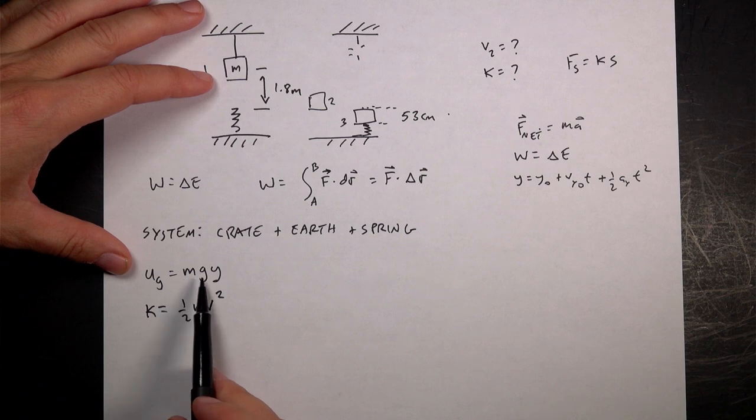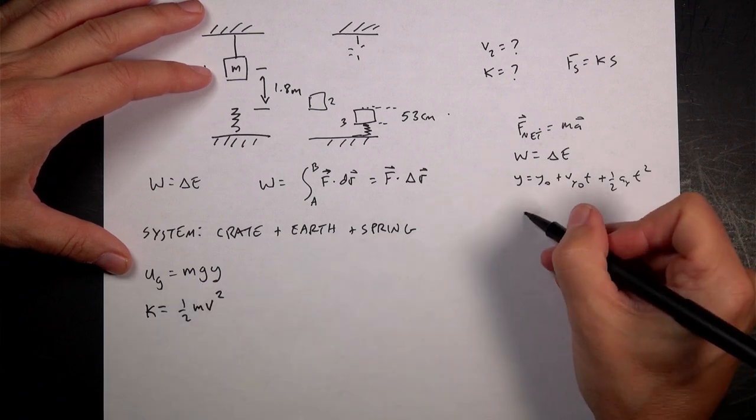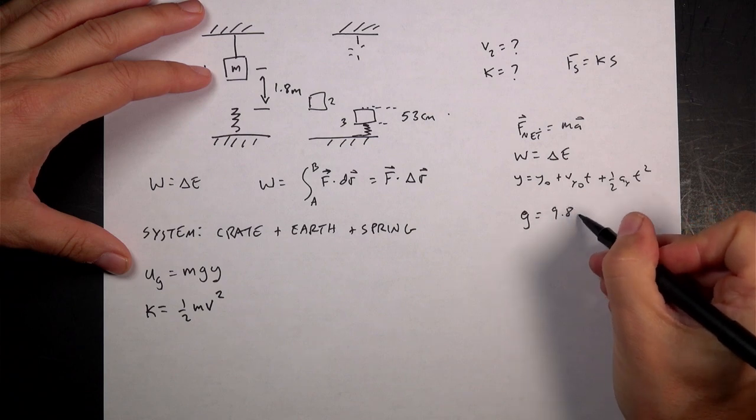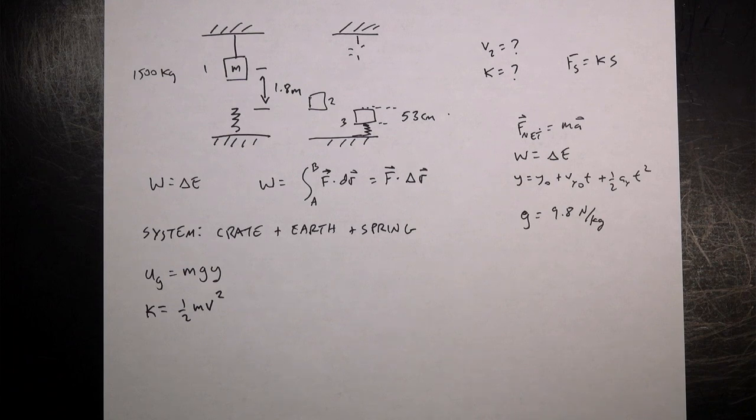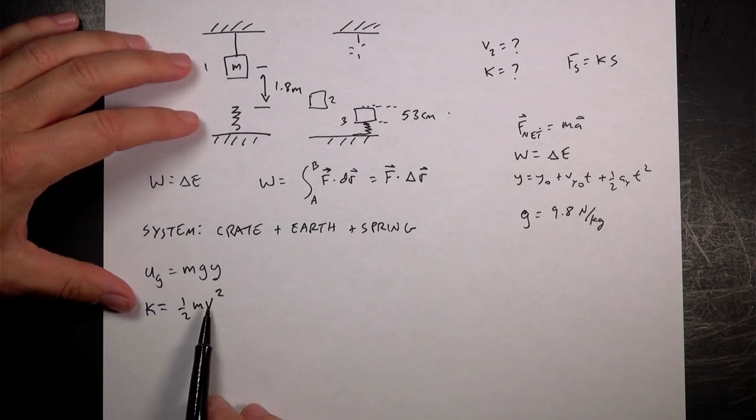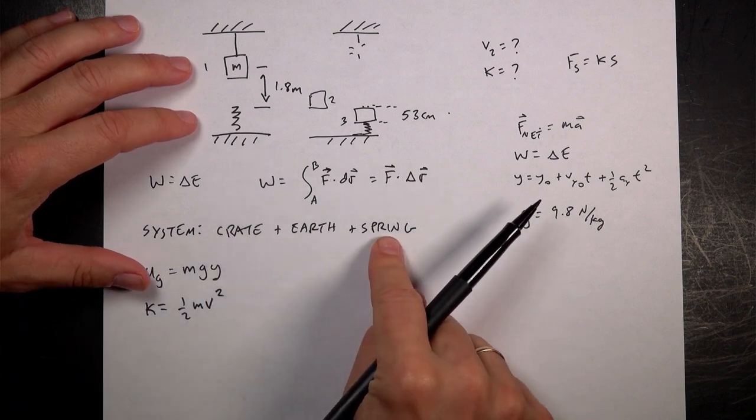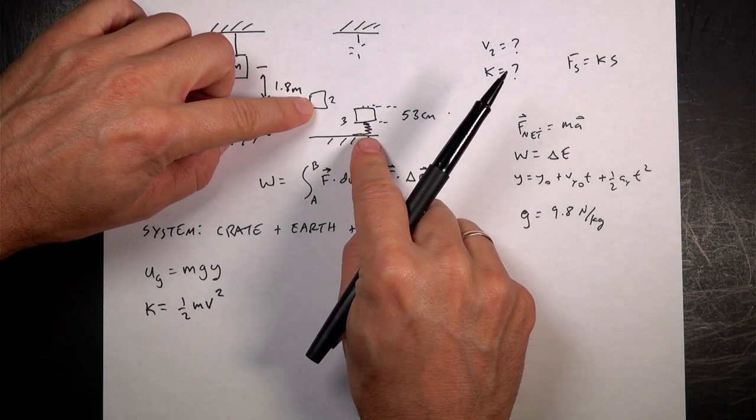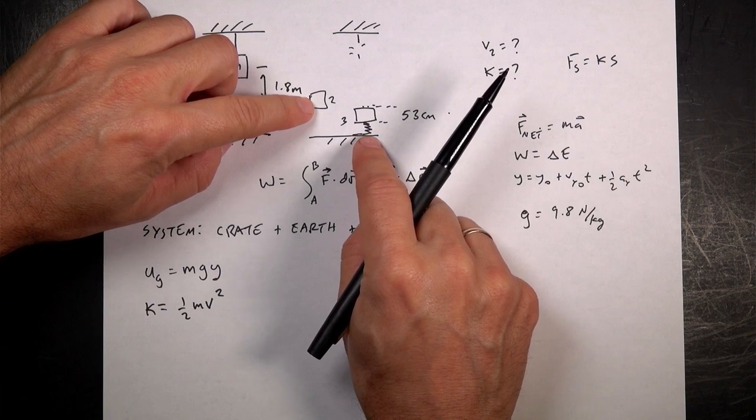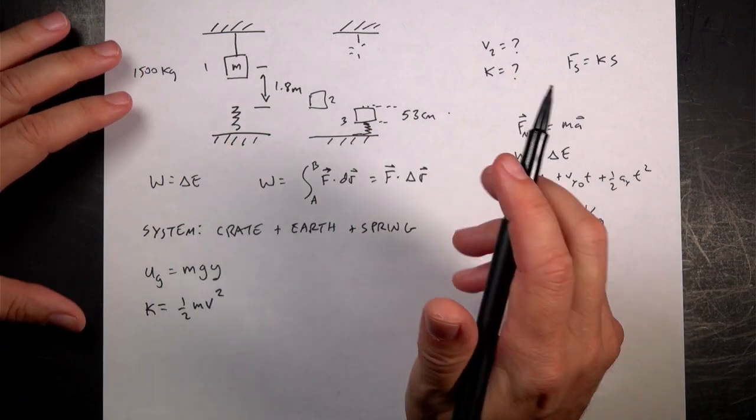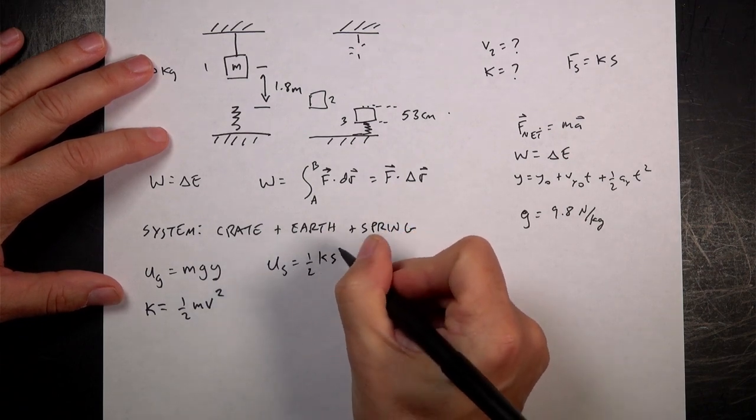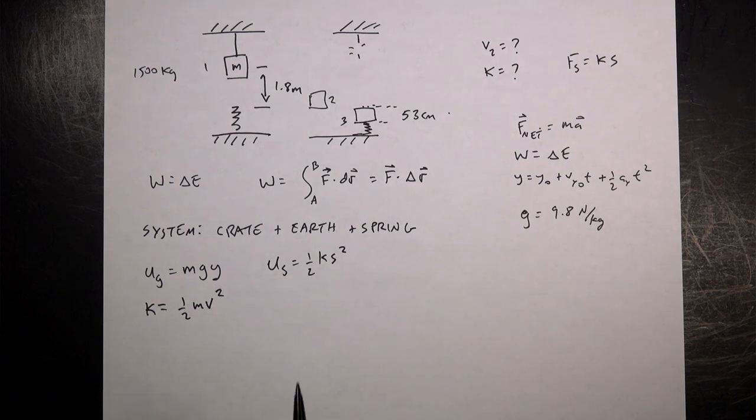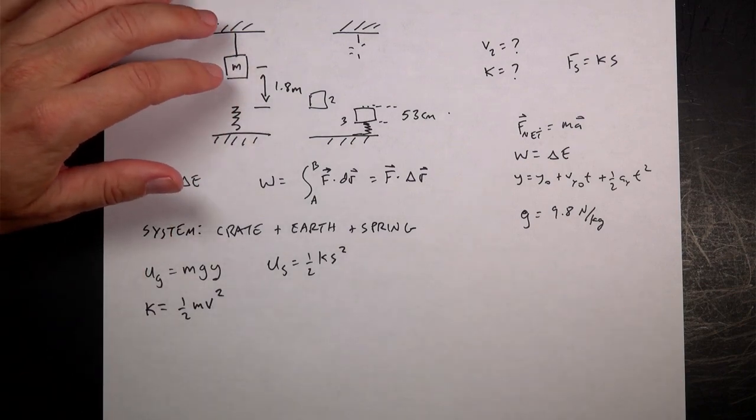That means that if there's any interactions on the system that's not in the system, then it would do work. After the string breaks, the gravitational force pulling it down doesn't do any work because the earth and the block are part of the system. But I will have gravitational potential energy, UG is MGY. I can also have kinetic energy, one-half mv squared. And then I have the spring potential energy, one-half k s squared, where s is the amount stretched or compressed.